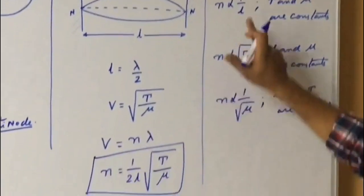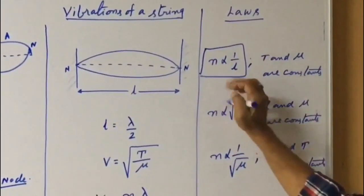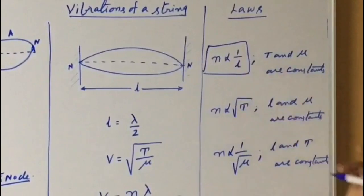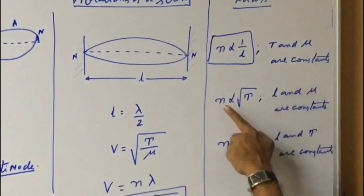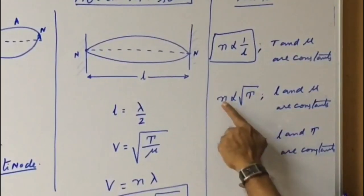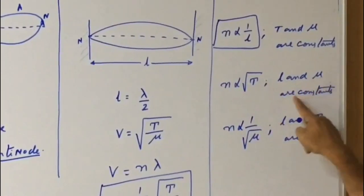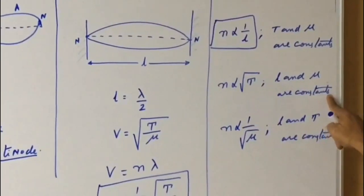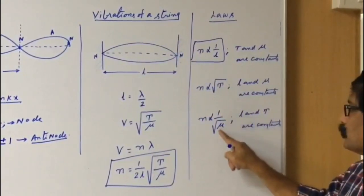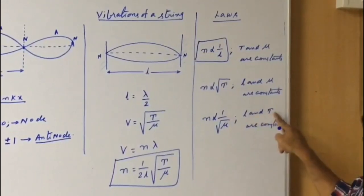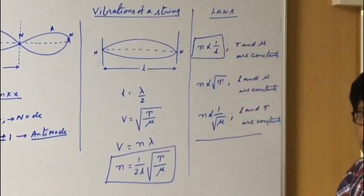Based on this formula we can state the laws of vibrating string. First law: when tension and linear density remain constant, frequency is inversely proportional to length — n ∝ 1/l. Second law: frequency of a vibrating string is proportional to the square root of tension when length and linear density are constants. These are the laws of the vibrating string, and to verify them we use a sonometer.